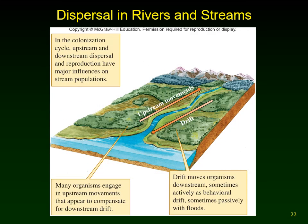A fourth reason for population movement is displacement and return. The colonization cycle diagram shows that drift moves organisms downstream — sometimes actively, like a salmon going downstream, sometimes passively, like being forced downstream by a flood. Many stream organisms have mechanisms for upstream movement to counteract drift, or to return upstream after a large displacement event.